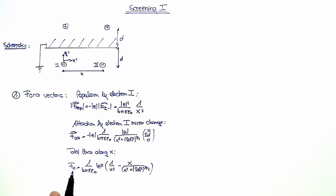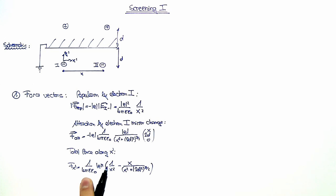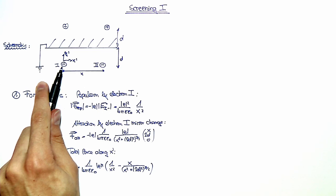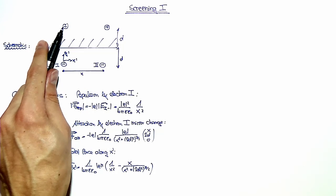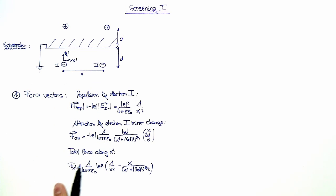In the equation for the total force along the x-prime direction, we can directly see the influence of the grounded plane. Because if we did not have this grounded plane, we would only get this term here — only the force acting on electron 2 due to electron 1. But due to this grounded plane, we had to introduce the mirror charges, and this results in an attractive force on electron 2. So the total force along x-prime is reduced, and we can say that the screening due to the ground plane reduces the repulsive electron-electron interaction.